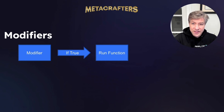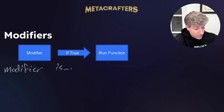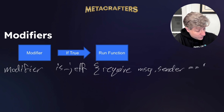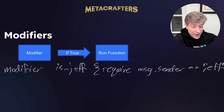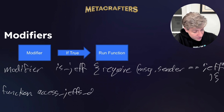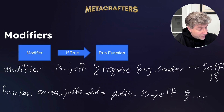In Solidity, the syntax looks like this. We have the keyword modifier is_Jeff, followed by a left brace. We use the keyword require, with msg.sender double-equals the string 'Jeff' in parentheses. Then we close the brace. To declare the function, we use the keyword function, call it 'access Jeff's data', then the keyword public, and the name of the modifier is_Jeff.